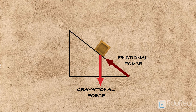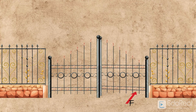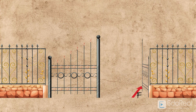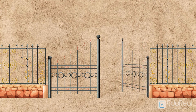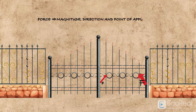Whereas gravitational force is without contact. For closing or opening a gate, we need to apply force as per the requirement — that tells the direction. And based on the point of application, the magnitude required will change. Force is characterized by its magnitude, direction, and point of application.